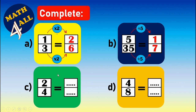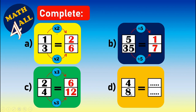For example C, with two fourths: if I multiply something in the numerator, I multiply the same in the denominator. I'll choose to multiply by three: two times three equals six, four times three equals twelve — so two fourths equals six twelfths. For the last example, four eighths: both are even numbers so I can divide by two. Four divided by two equals two, eight divided by two equals four — so four eighths equals two fourths.